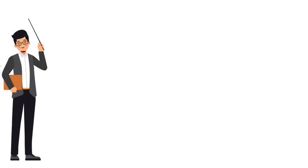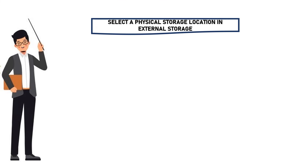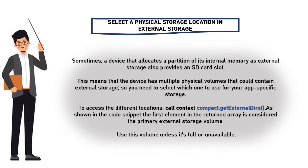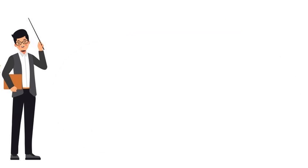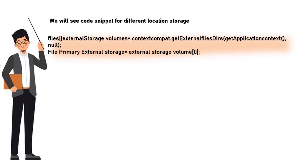Select a physical storage location in external storage. Sometimes a device that allocates a partition of its internal memory as external storage also provides an SD card slot. This means the device has multiple physical volumes that could contain external storage, so you need to select which one to use for your app-specific storage. To access the different locations, call ContextCompat.getExternalFilesDirs(). As shown in the code snippet, the first element in the returned array is considered the primary external storage volume — use this volume unless it's full or unavailable. Here we will see a code snippet for different location storage.